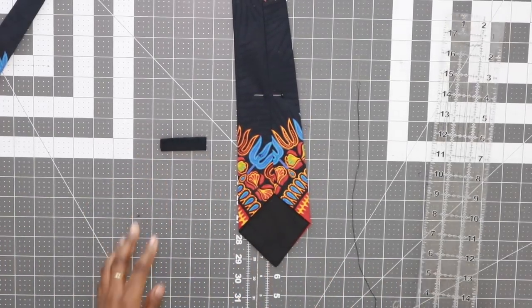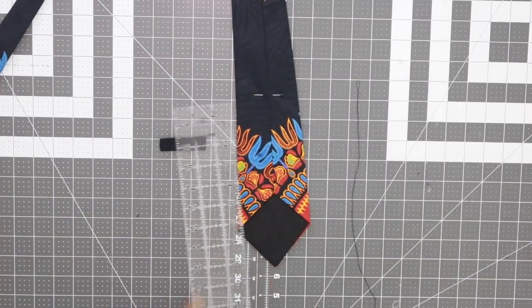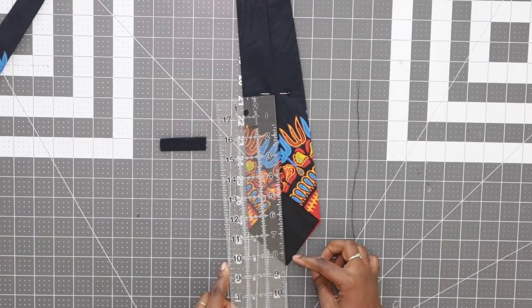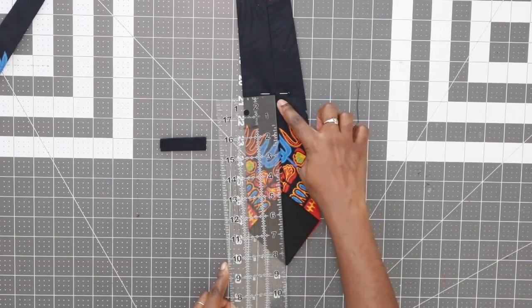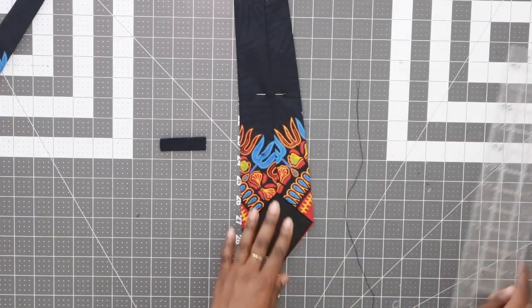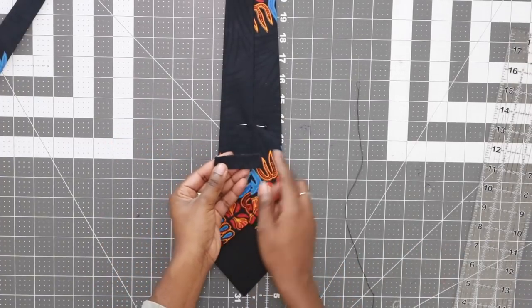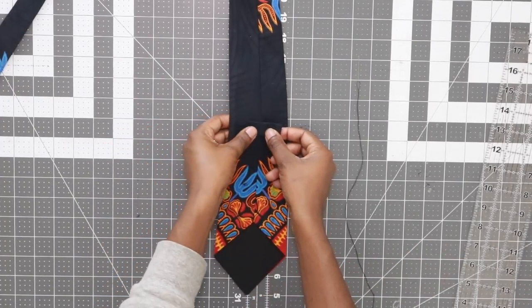Next what you want to do is from the bottom, you want to measure up 8 1/2 inches. And I went ahead and marked it with a pin. And then what you want to do is take the tie keeper and place it over.